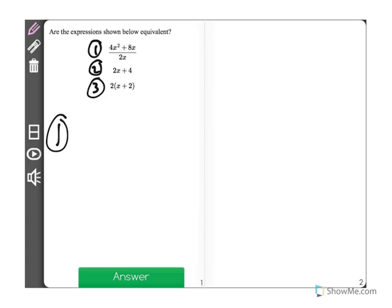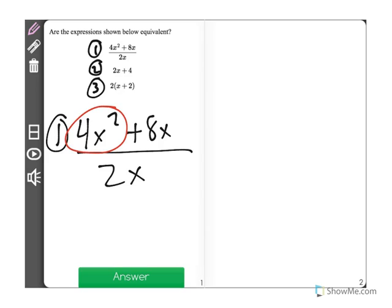I'm going to start with expression 1: 4x squared plus 8x divided by 2x. Now what this means is we're going to take each of these terms up top, 4x squared and 8x, and divide them by 2x. Let's start with 4x squared.